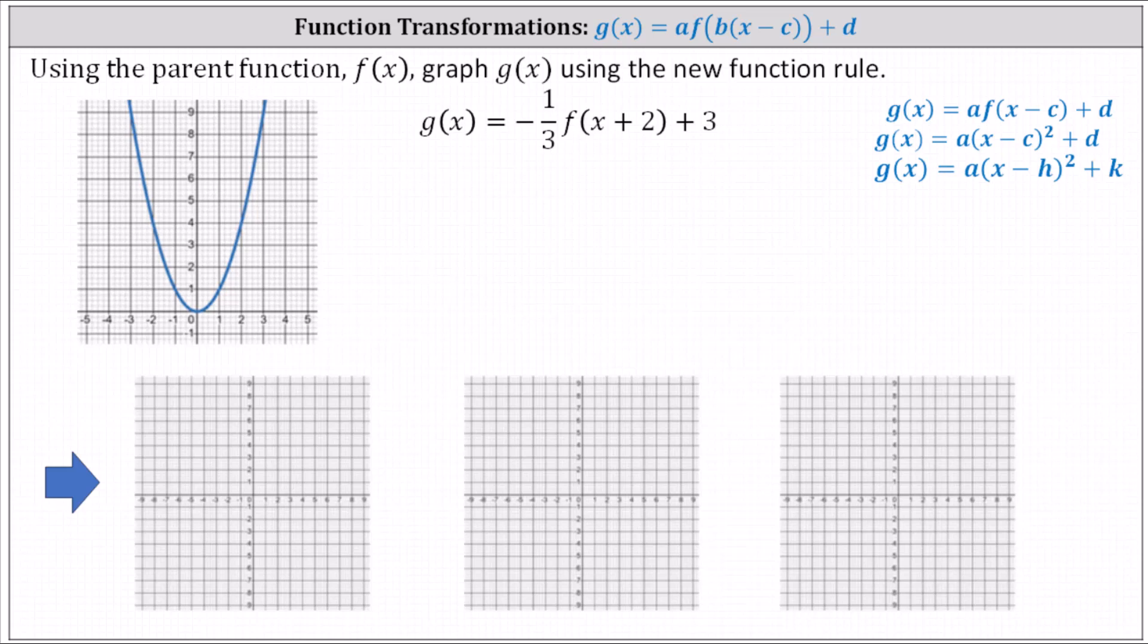Using the parent function f of x below, we may recognize f of x as f of x equals x squared. We want to graph g of x using the new function rule, which is g of x equals negative one-third times f of the quantity x plus two plus three, using transformations.